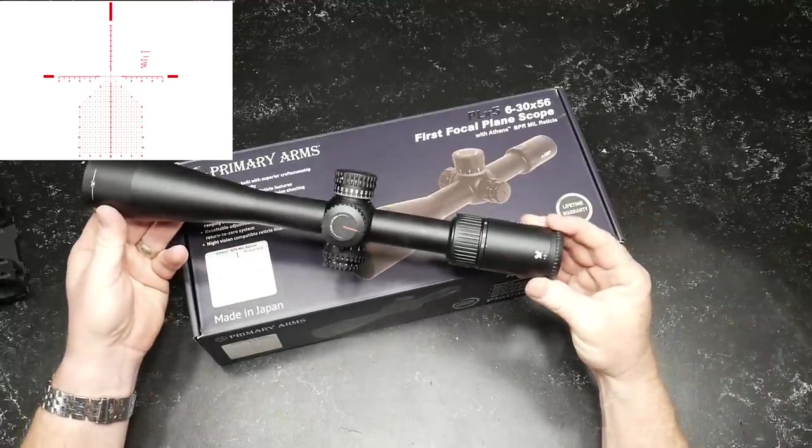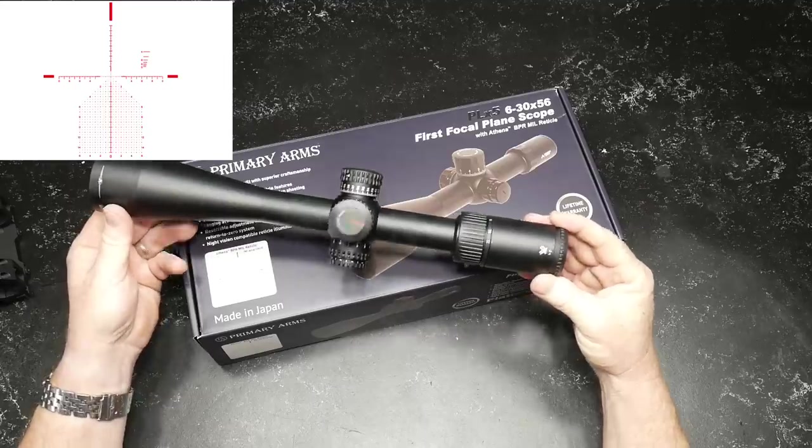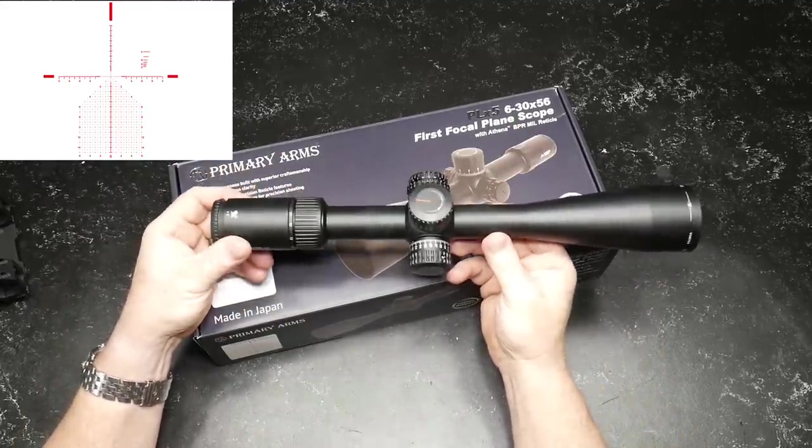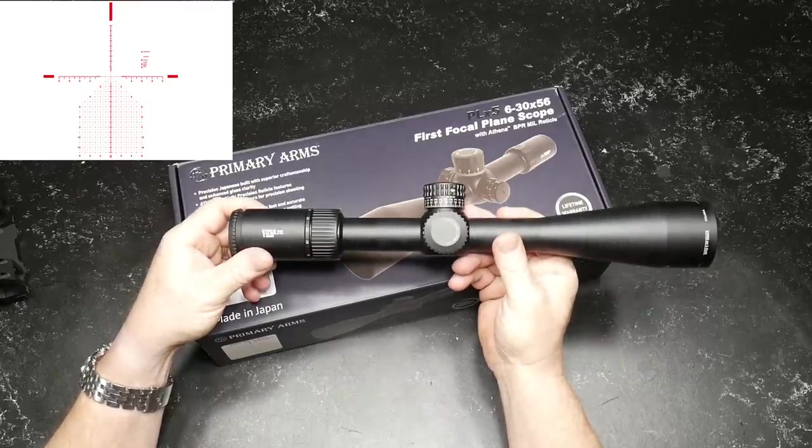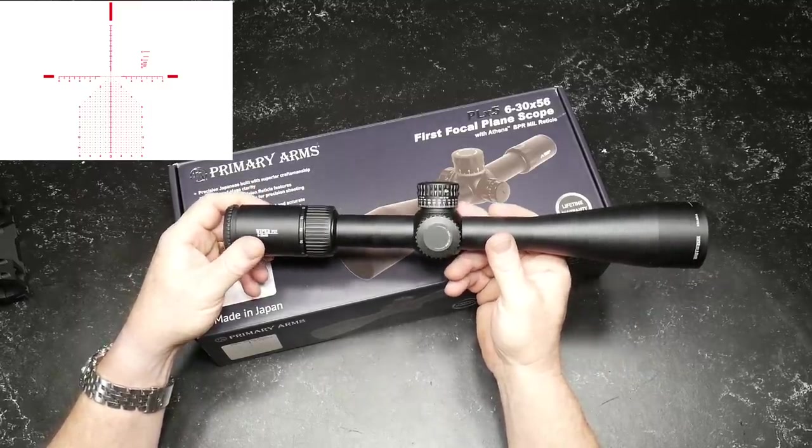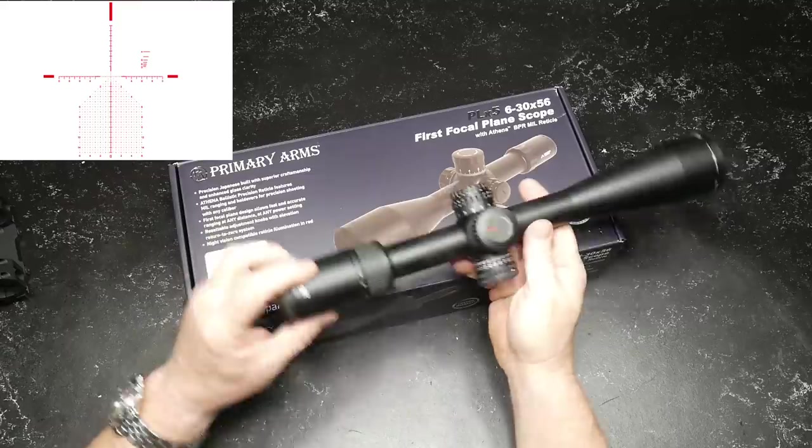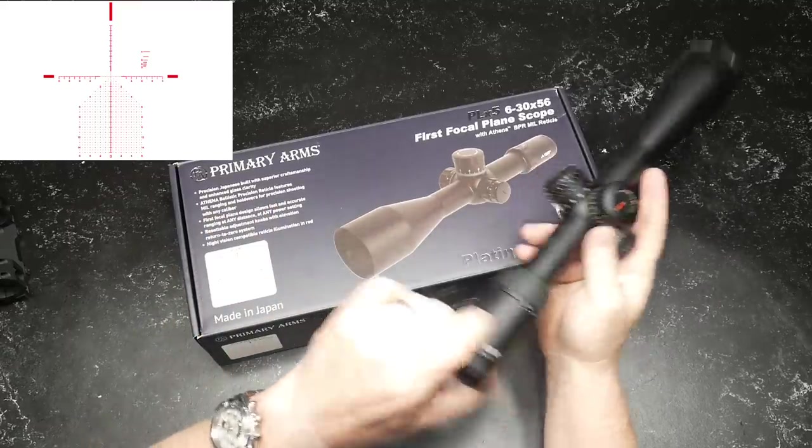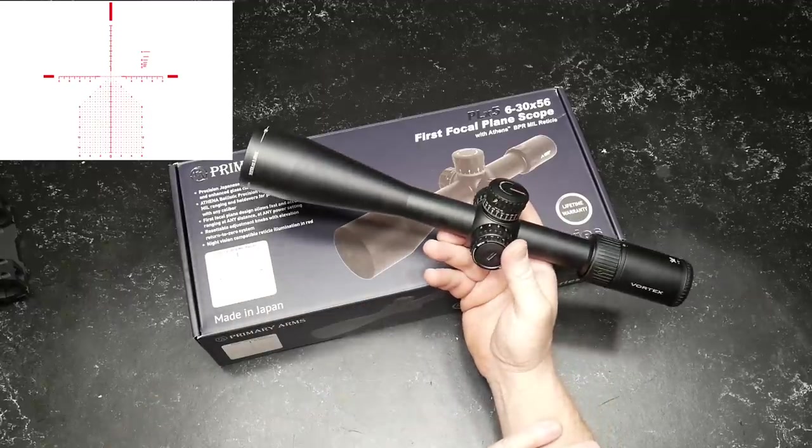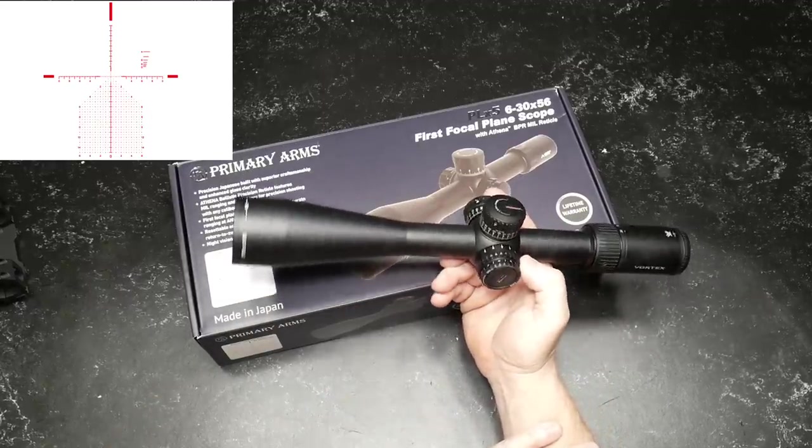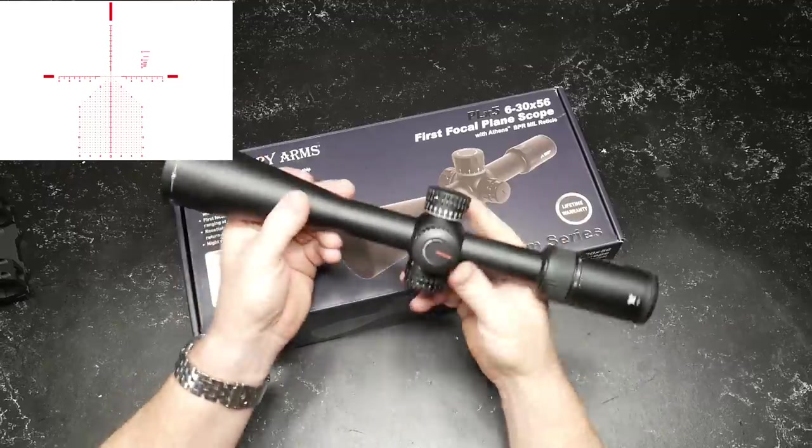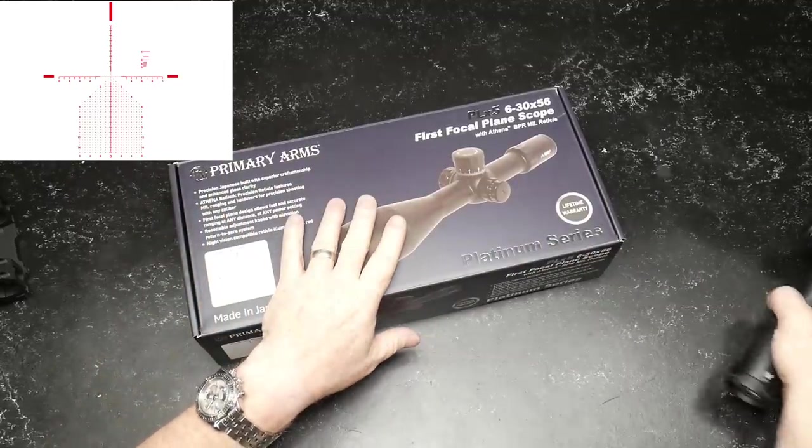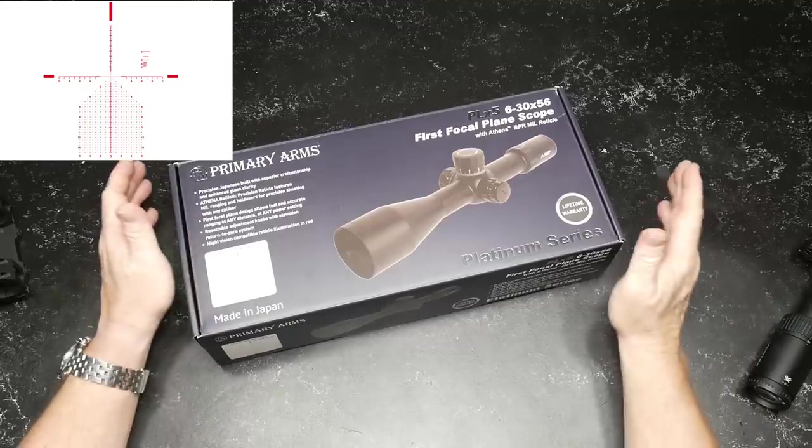When I first got into long range shooting with the 6.5 Creedmoor, I put this Vortex Viper PST on top, their 5 to 25 by 50 first focal plane scope with the EBR2 reticle. It's a great reticle. I didn't realize I was going to switch over to mils. This is a great scope, but I will tell you this is a better scope.